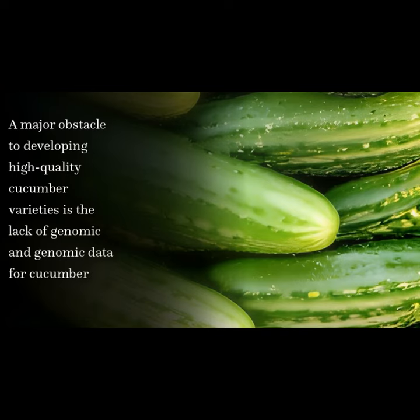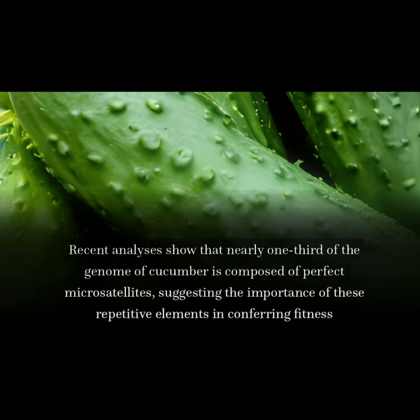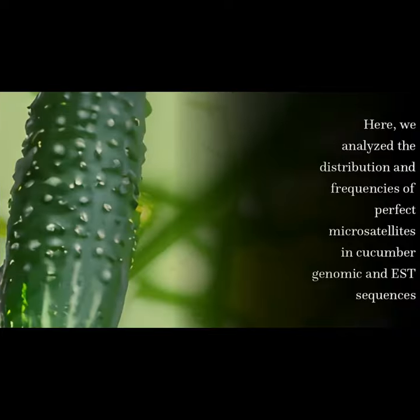A major obstacle to developing high-quality cucumber varieties is the lack of genomic data for cucumber. Recent analyses show that nearly one-third of the genome of cucumber is composed of perfect microsatellites, suggesting the importance of these repetitive elements in conferring fitness. Here, we analyzed the distribution and frequencies of perfect microsatellites in cucumber genomic and EST sequences.